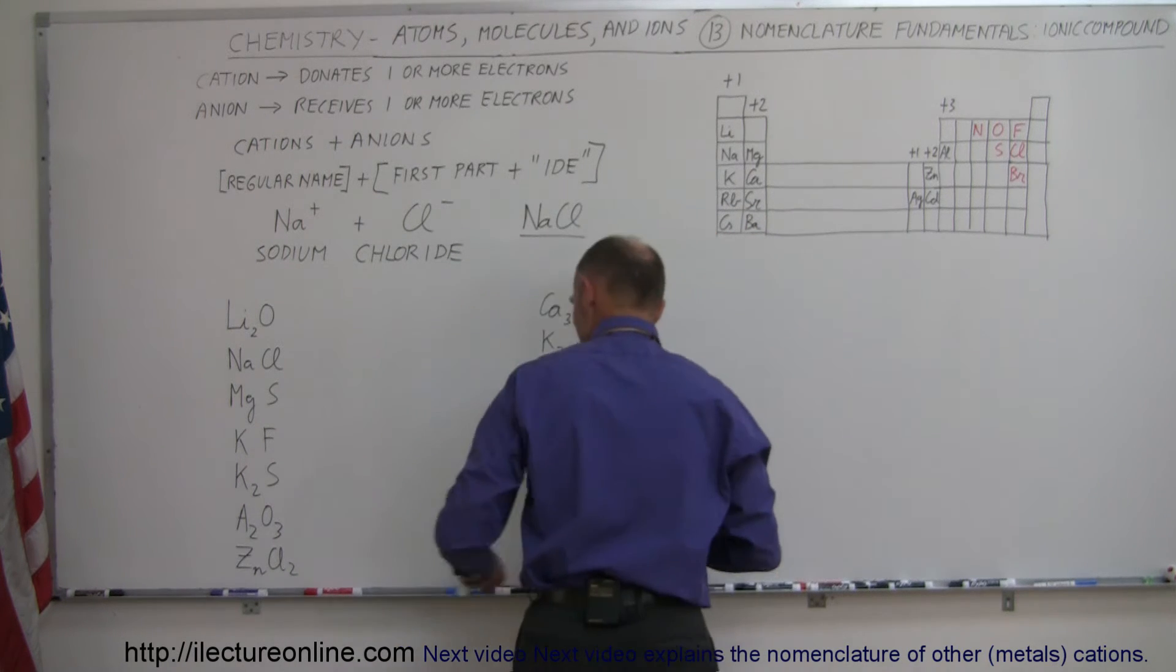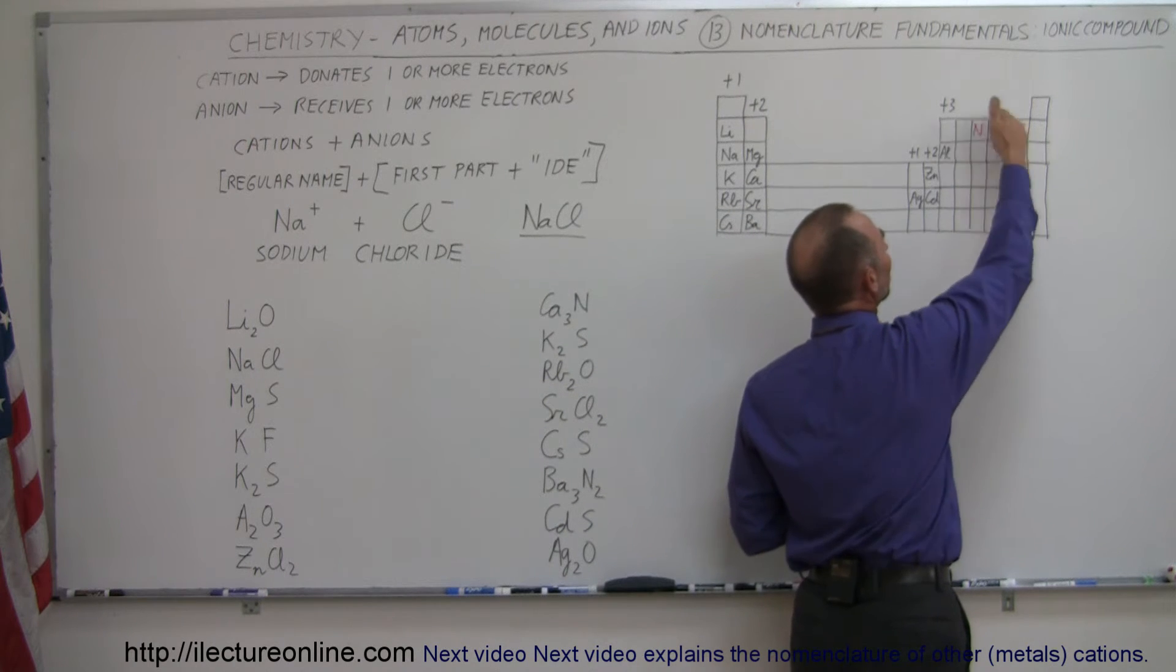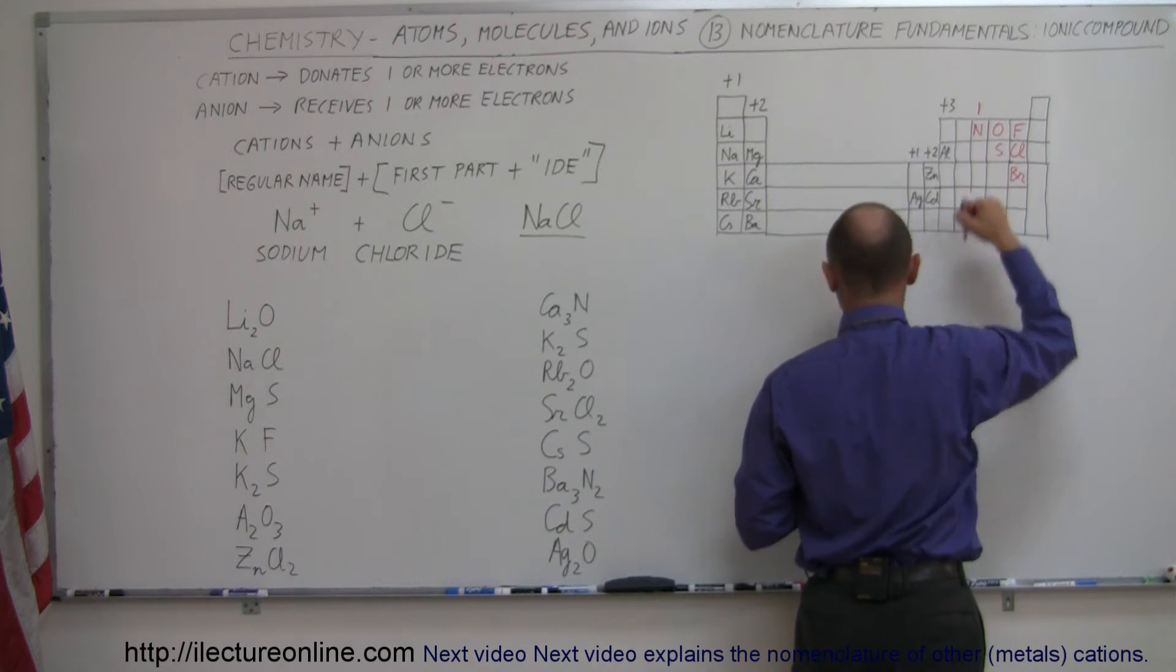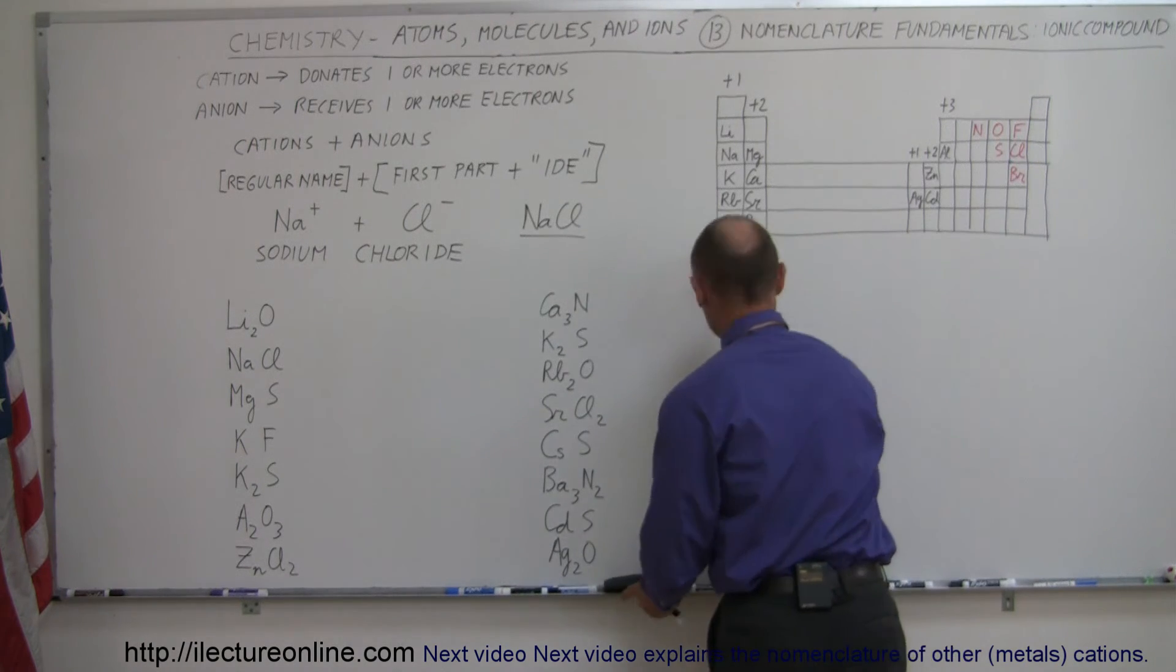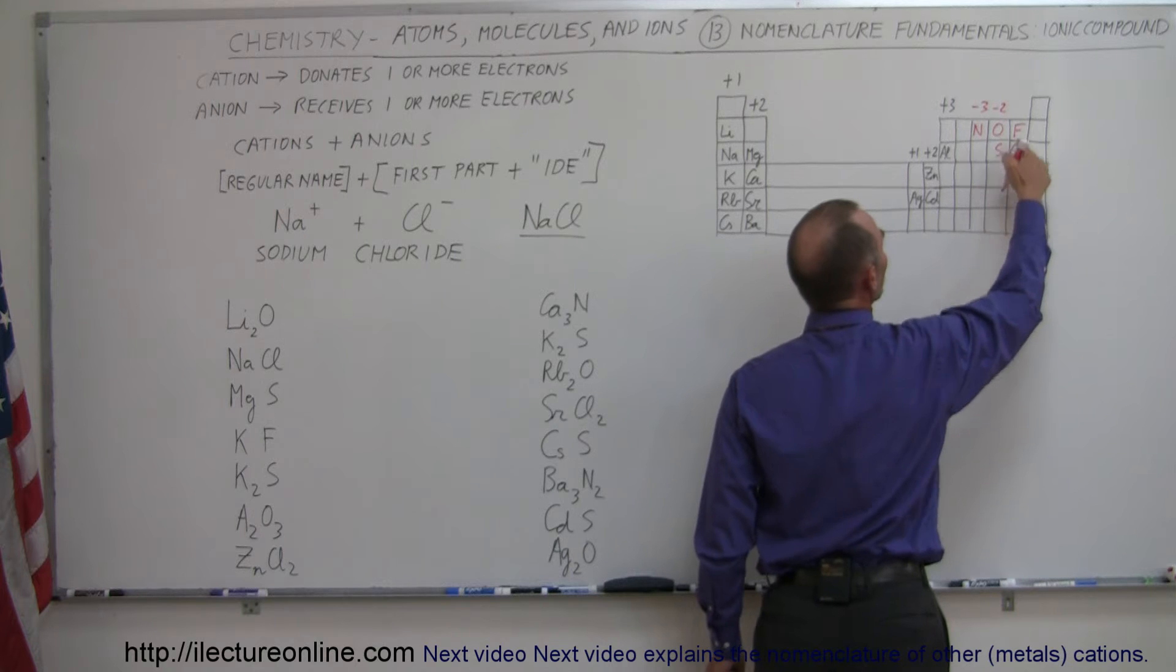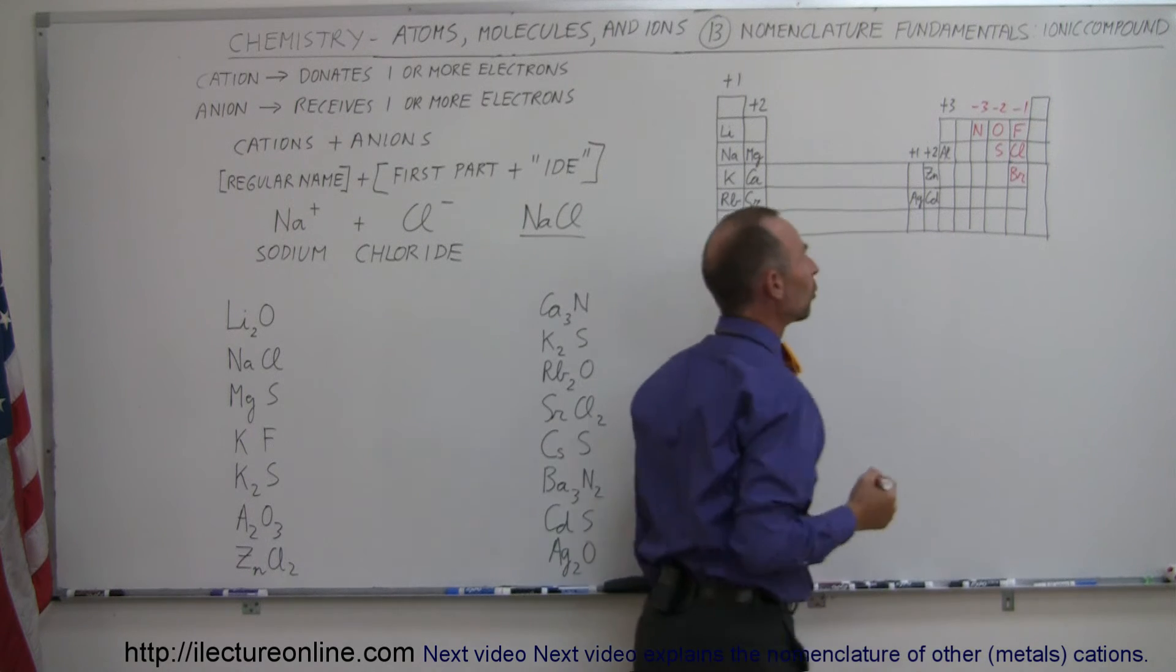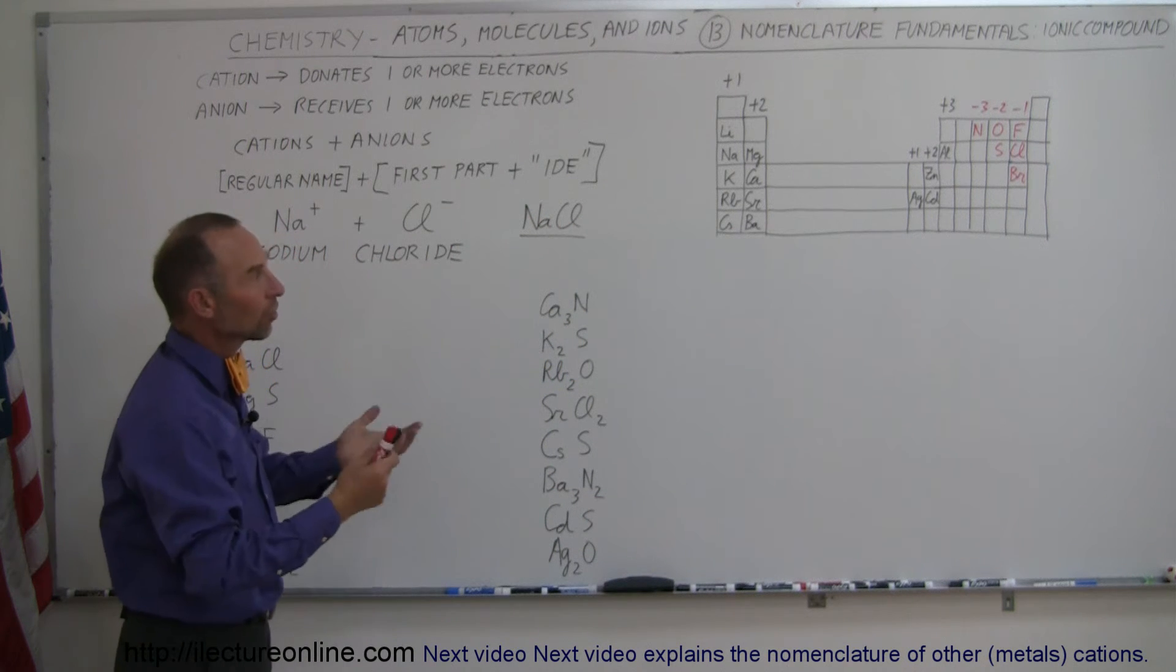The anions come from these elements when they attract electrons. So nitrogen tends to attract three electrons and becomes minus three charge when they become ions. Oxygen and sulfur tend to attract two electrons, so become negatively two charged. And fluorine, chlorine, and bromine, they tend to attract one electron and therefore become minus one charge when they turn into ions or anions.